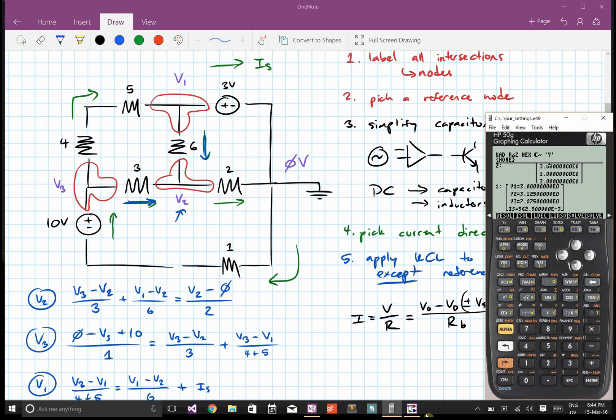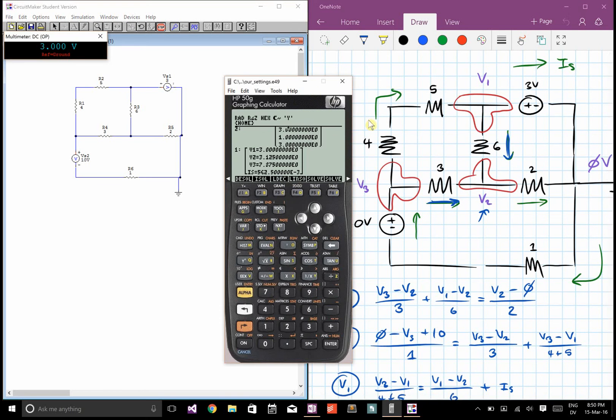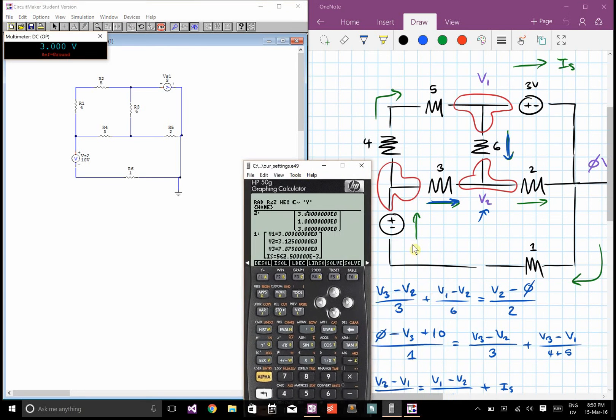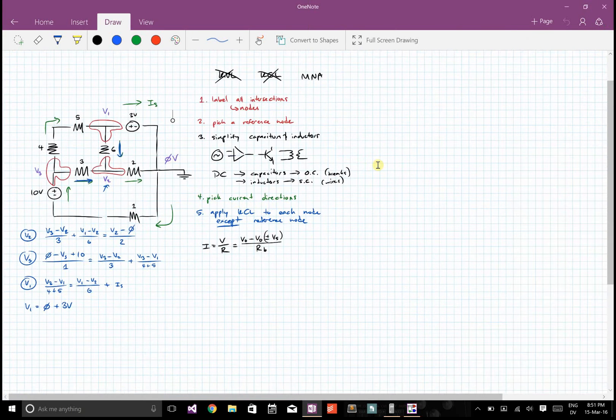Now let's just confirm that what we've done is correct by modeling it. So we said V1 was three volts, which our simulation agrees with. We said V2 was 3.125 volts, which our simulation agrees with. We said that V3 was 7.875 volts. And we said that the current through this branch was 562.5 milliamps. So there you go. It works.